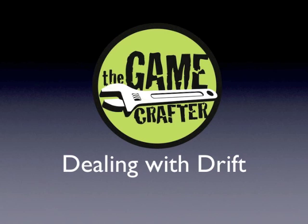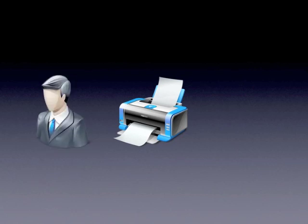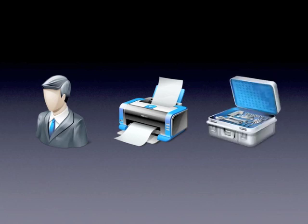Welcome to this Game Crafter tutorial on dealing with drift. Under normal circumstances, everything should cut exactly according to the template so that you get a card that looks like the card you were expecting based on your design. However, that's not always possible. There are printers, people, and various types of other machinery such as cutters, folders, and slitters — all of those things can introduce error. And that error is called drift.